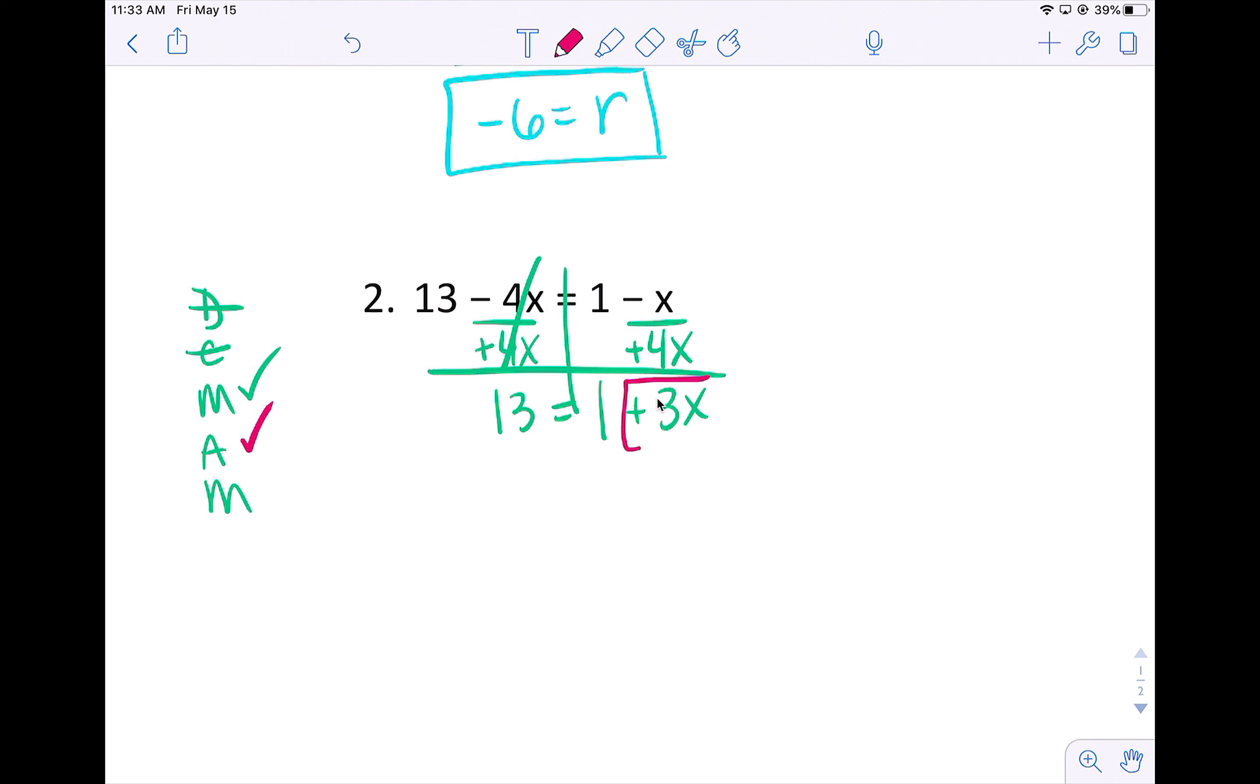Next step: outside of 3x I have a 1 so I will move it through the opposite. 1 minus 1 cancels. 13 minus 1 is 12. Then I will divide everything by that number in front. 3 divided by 3 cancels. 12 divided by 3 is 4.